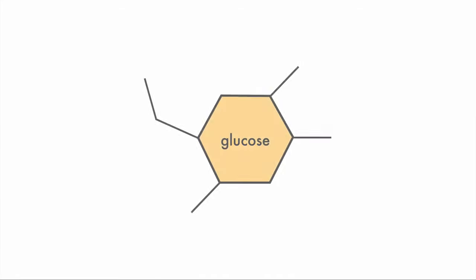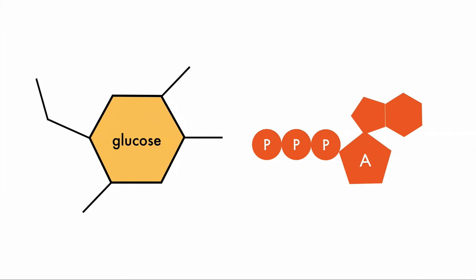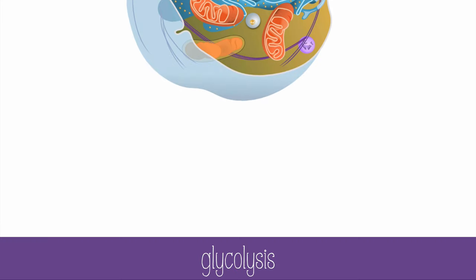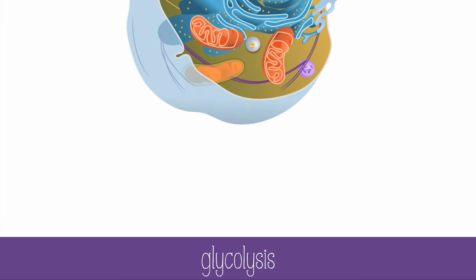The cell needs to be able to harvest energy from glucose to get the usable energy ATP. Whether oxygen is present or not, cells can always do glycolysis, which occurs in the fluid cytosol of the cell.